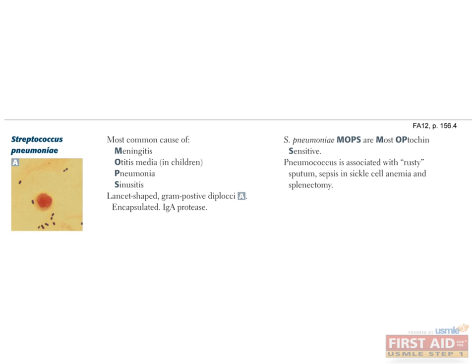Strep pneumoniae is our alpha-hemolytic, gram-positive cocci that is optochin-sensitive. MOPS is a useful mnemonic for remembering the types of infections that strep pneumoniae causes: meningitis, otitis media, pneumonia, and sinusitis. Strep pneumo — not Neisseria meningitidis, which we'll discuss in the gram-negative section — is the most common cause of meningitis in children 6 months to 6 years and in the elderly.